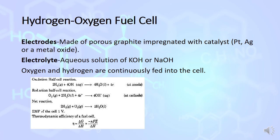Example of fuel cell: hydrogen-oxygen fuel cell. Electrodes are made up of porous graphite impregnated with catalysts like platinum, silver, or a metal oxide. Electrolyte uses aqueous solution of KOH or sodium hydroxide.